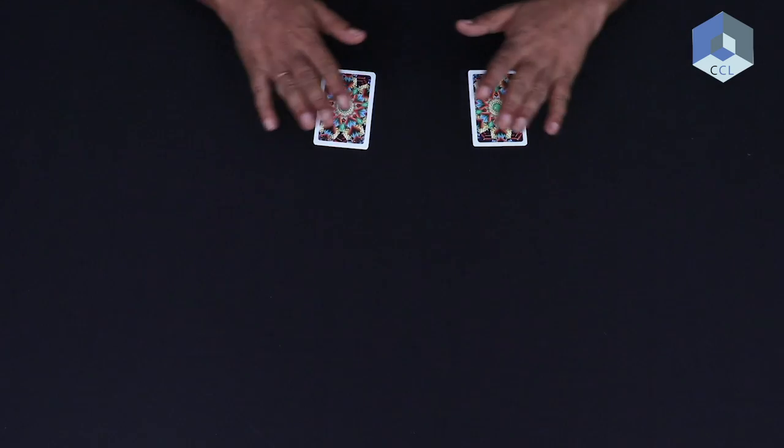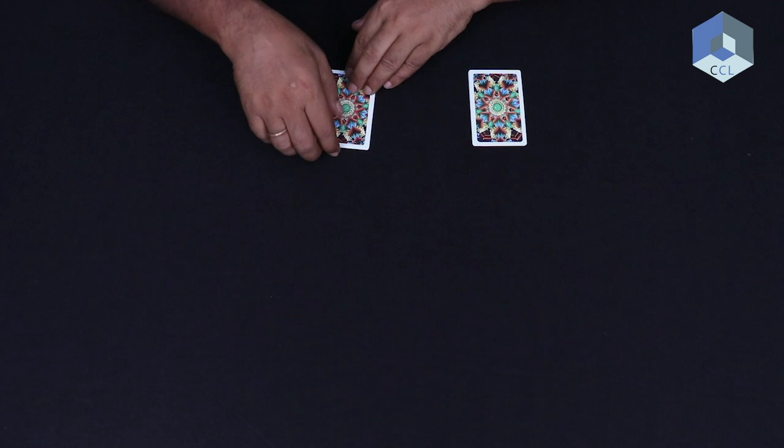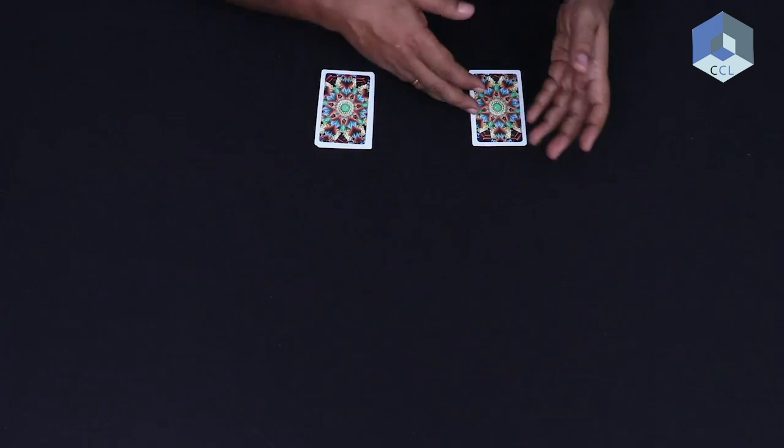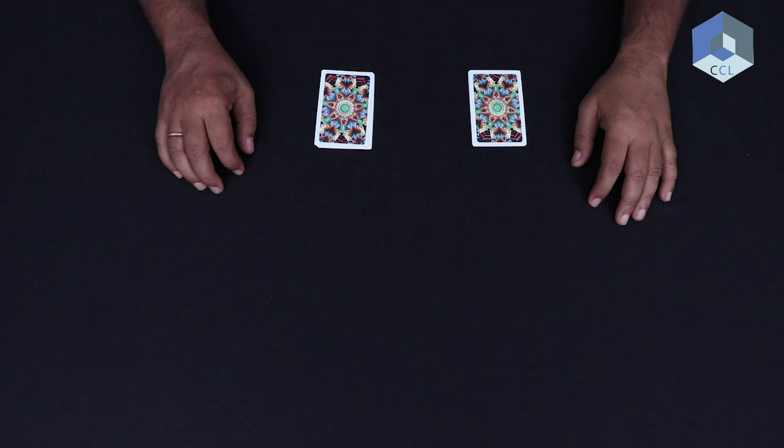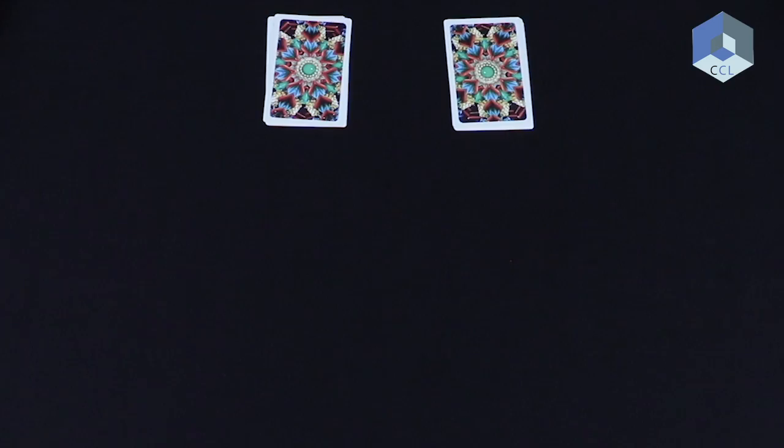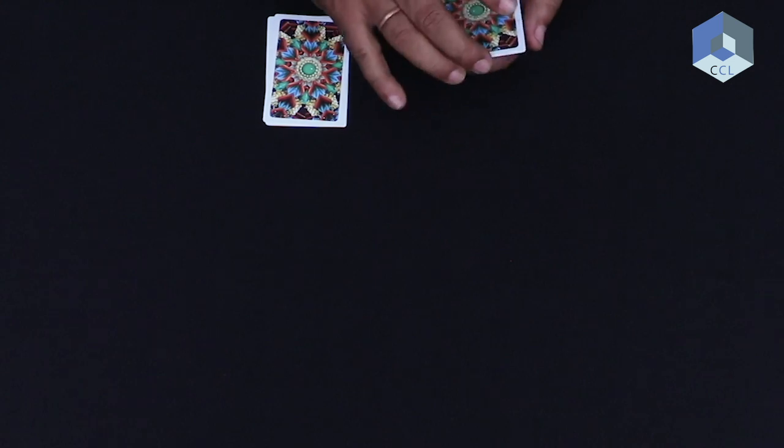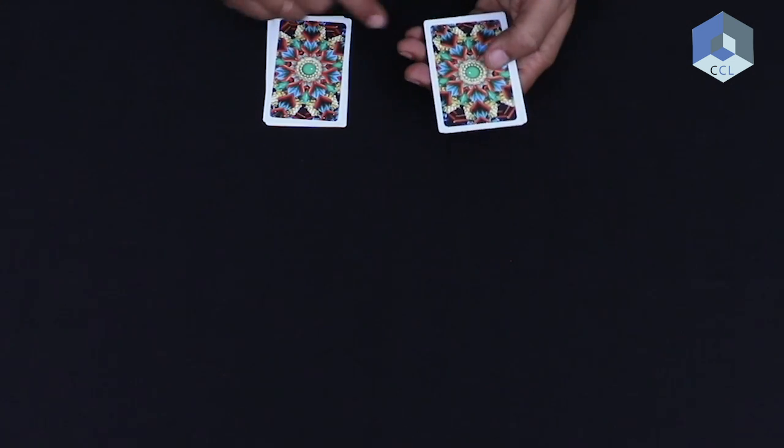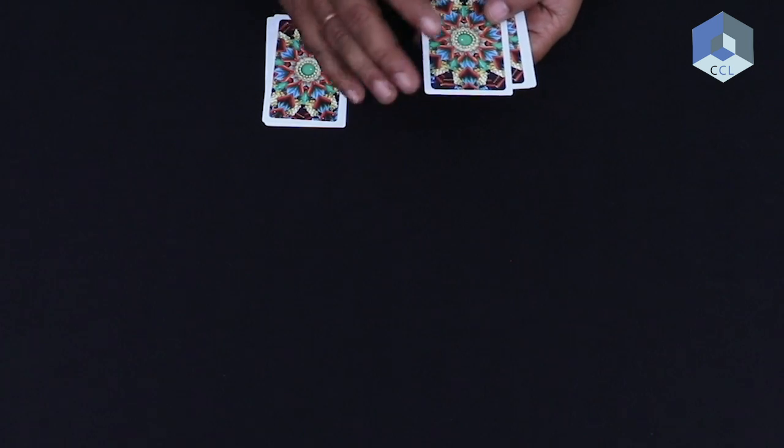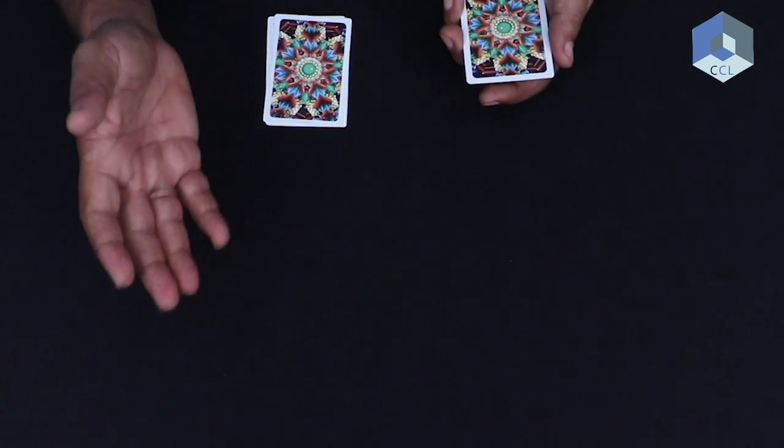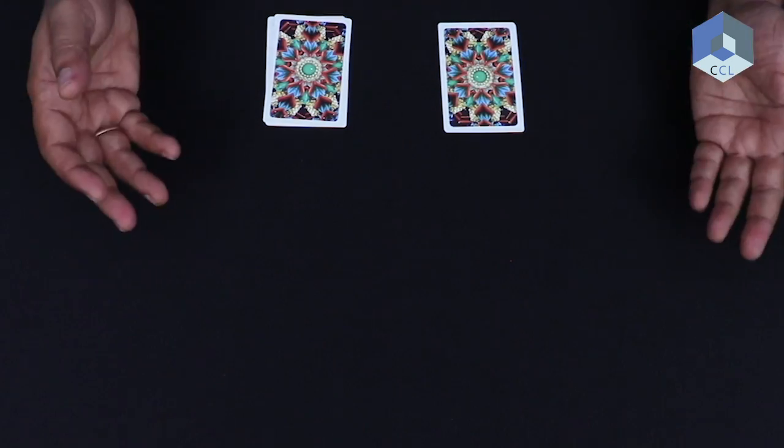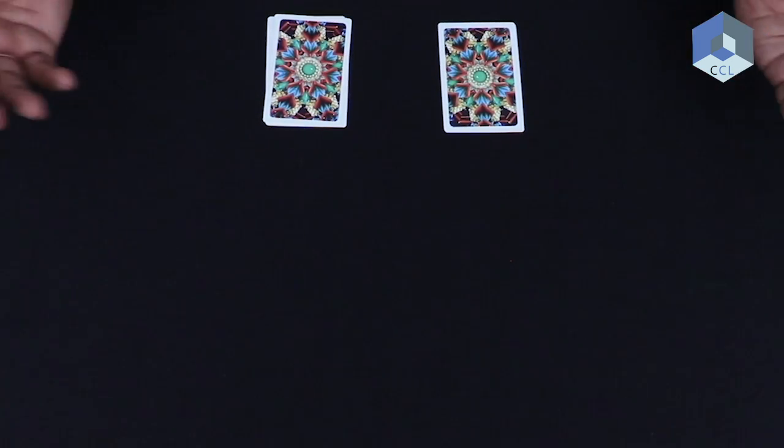Now I will count Mera Bharat Mahan and you can ask me which pile should I choose to shuffle. We will now do the Mera Bharat Mahan shuffle, but the shuffle is interesting. The only way I can do a shuffle is by taking this card and putting it down. You can decide which pile should I do the shuffle from and how many times.